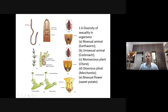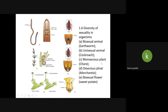Look into Chara. In Chara, you have both gonads in the same plant: a male sex organ and a female sex organ. As such it is monoecious, or hermaphrodite, or bisexual.